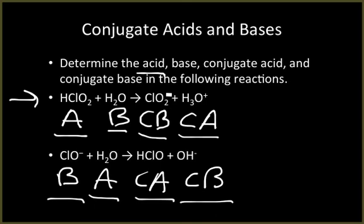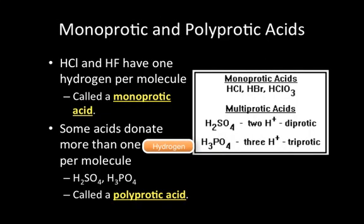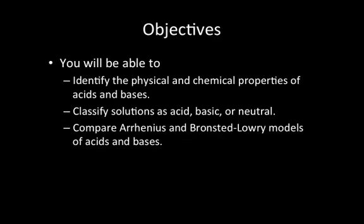Some acids have more than one hydrogen ion. HCl and HF each have just one and are called monoprotic acids. Some acids can donate more than one proton per molecule — like H2SO4 and H3PO4 — and these are called polyprotic acids. H2SO4 is diprotic, H3PO4 is triprotic. Make sure you understand the difference.